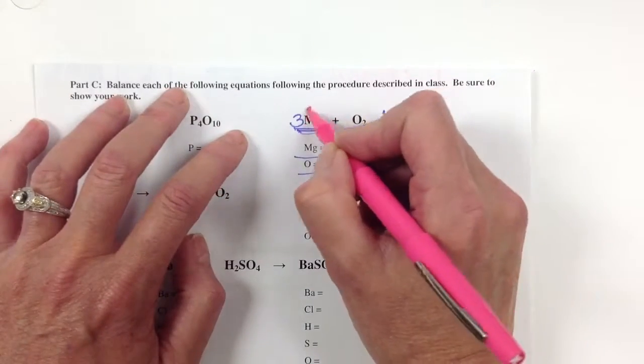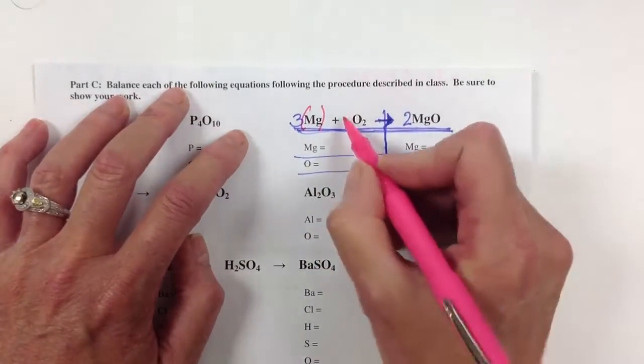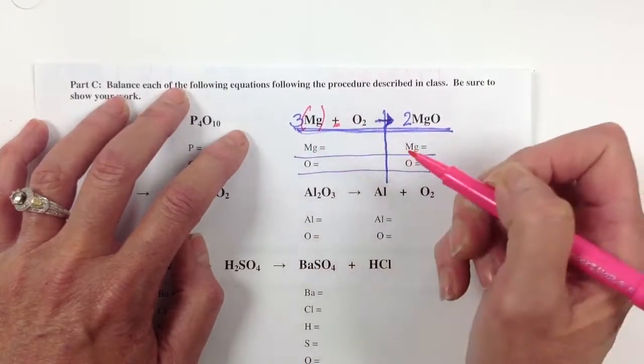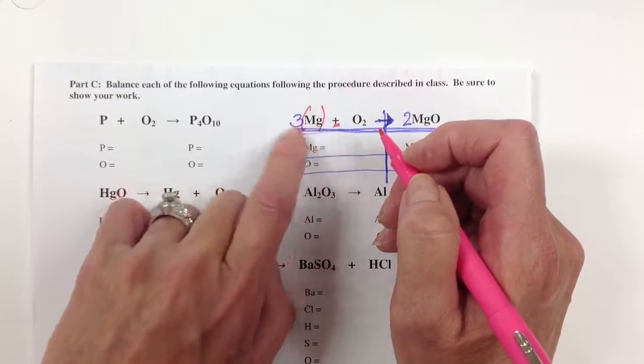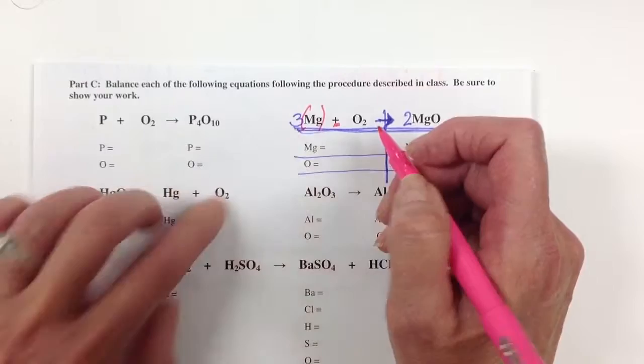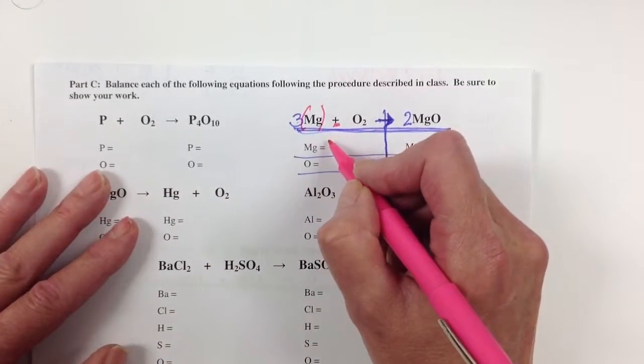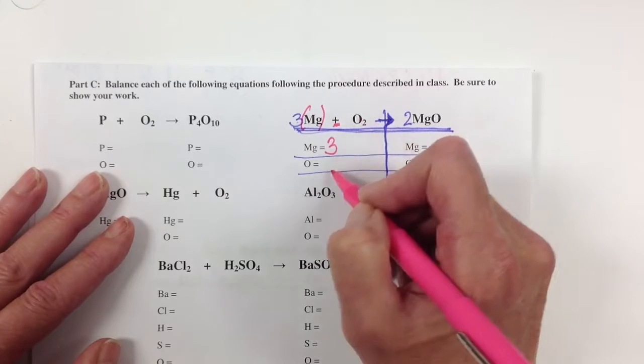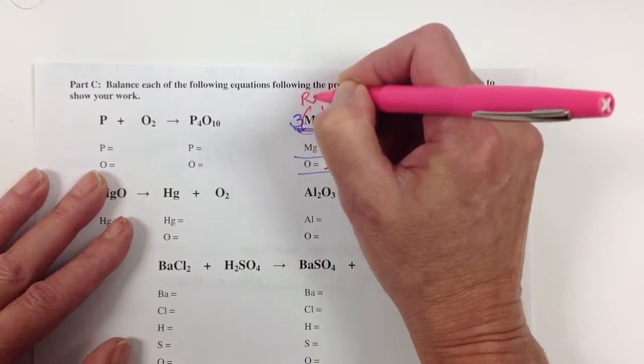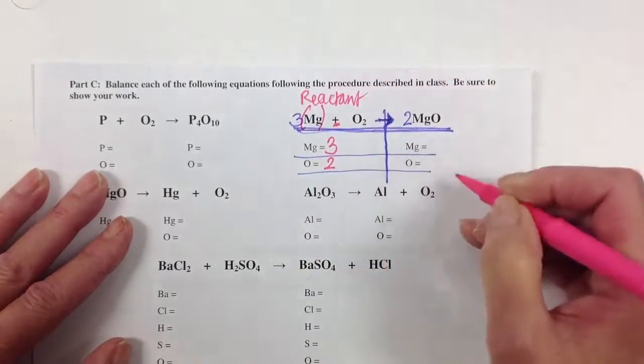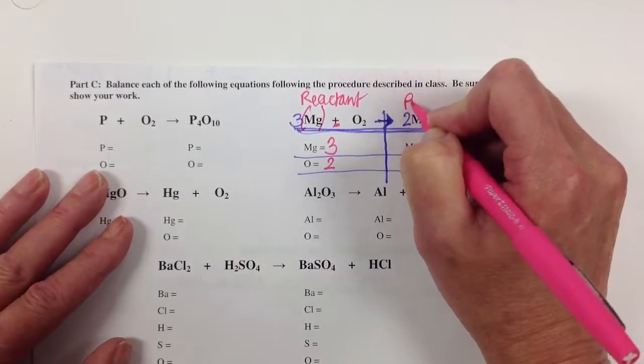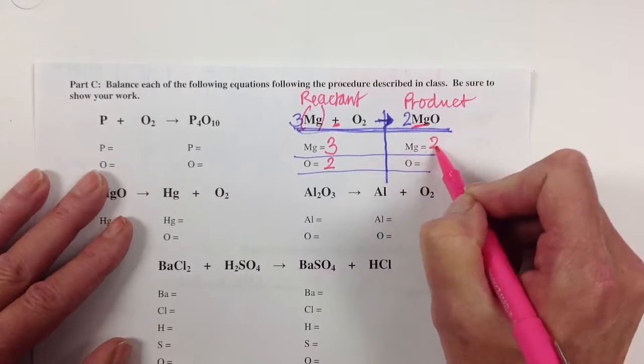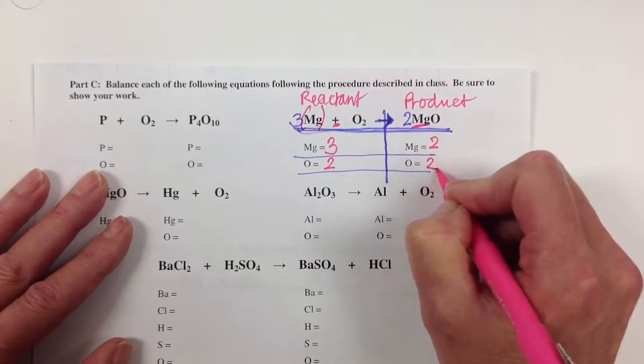So here, remember, our coefficient tells us how many of these we have. When you see a sign, the coefficient does not apply to whatever follows that sign. It only goes with whatever element or molecule or compound is directly behind it. So it tells us we have 3Mg plus we have how many O's? We have two. And this on the reactant side of the equation. Now let's look on the product side of the equation. So we have two magnesium and two oxygen.